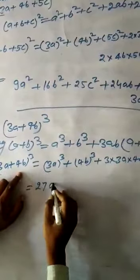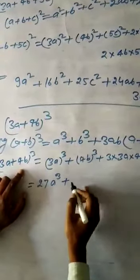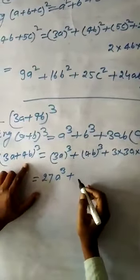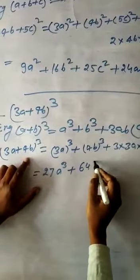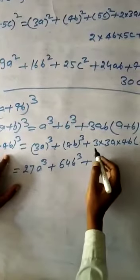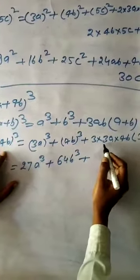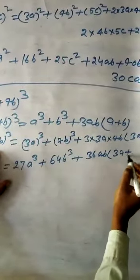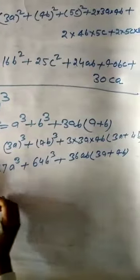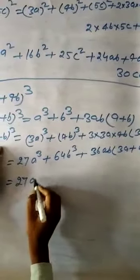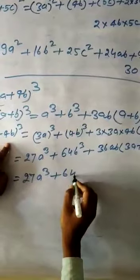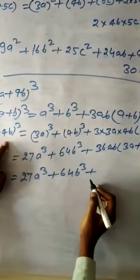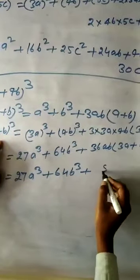So 3 times 3 is 9, times 3 is 27A cube. 4 cube: 4 times 4 is 16, times 4 is 64B cube. Plus 3 times 3 is 9, times 4 is 36AB into 3A plus 4B.